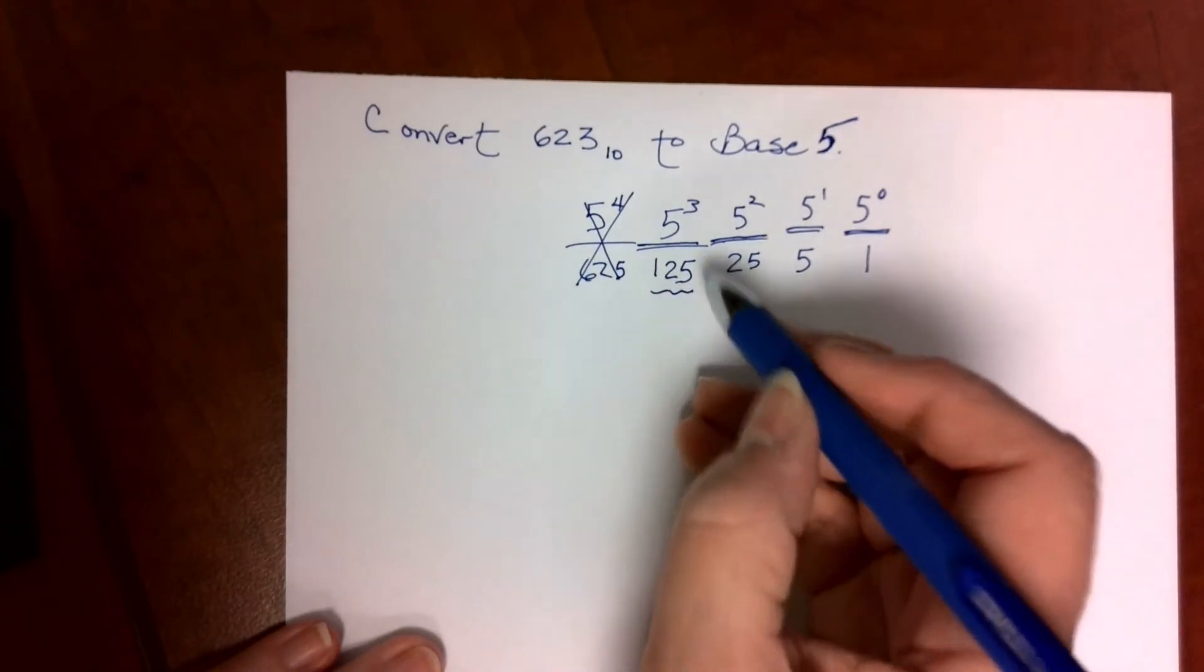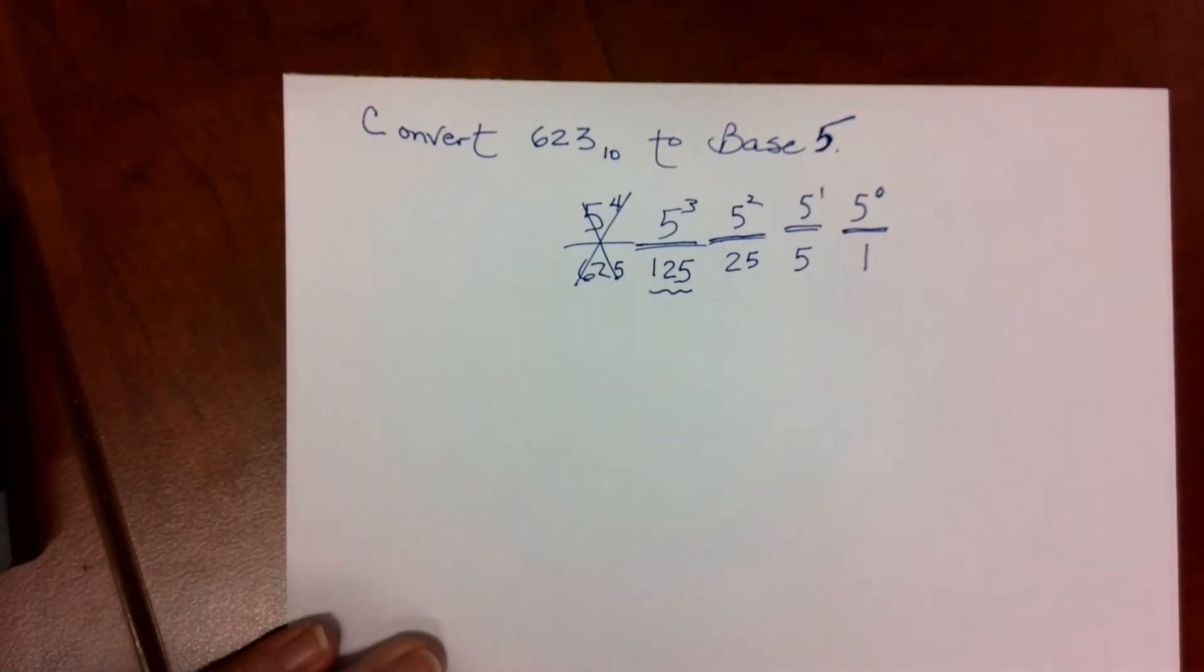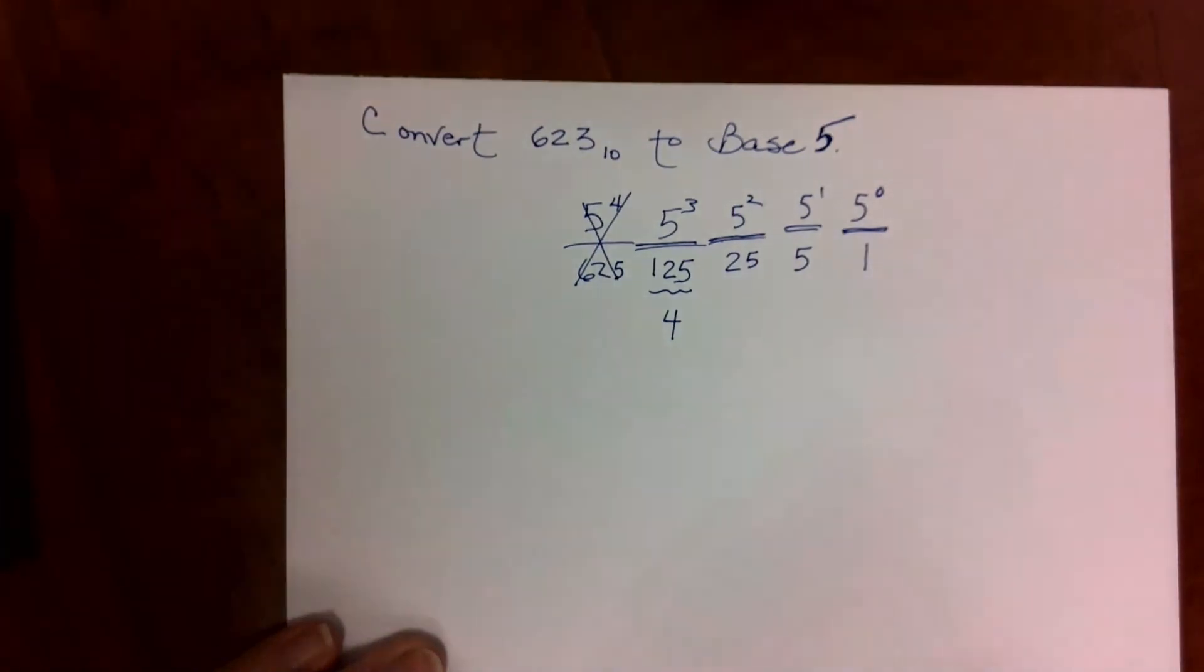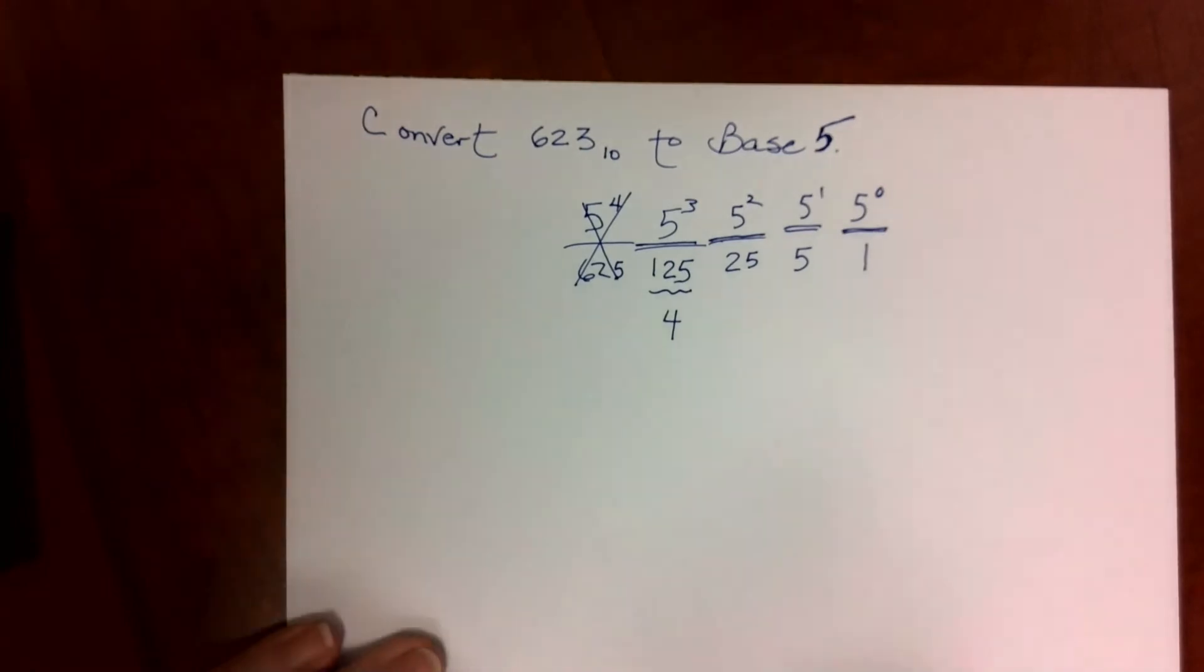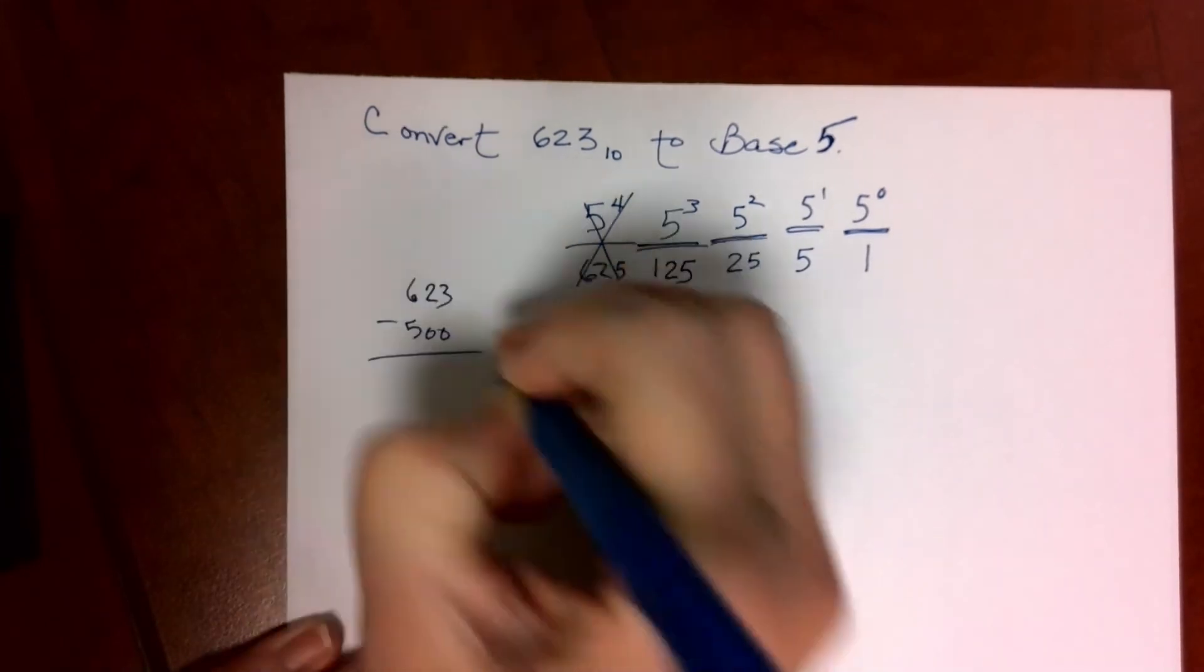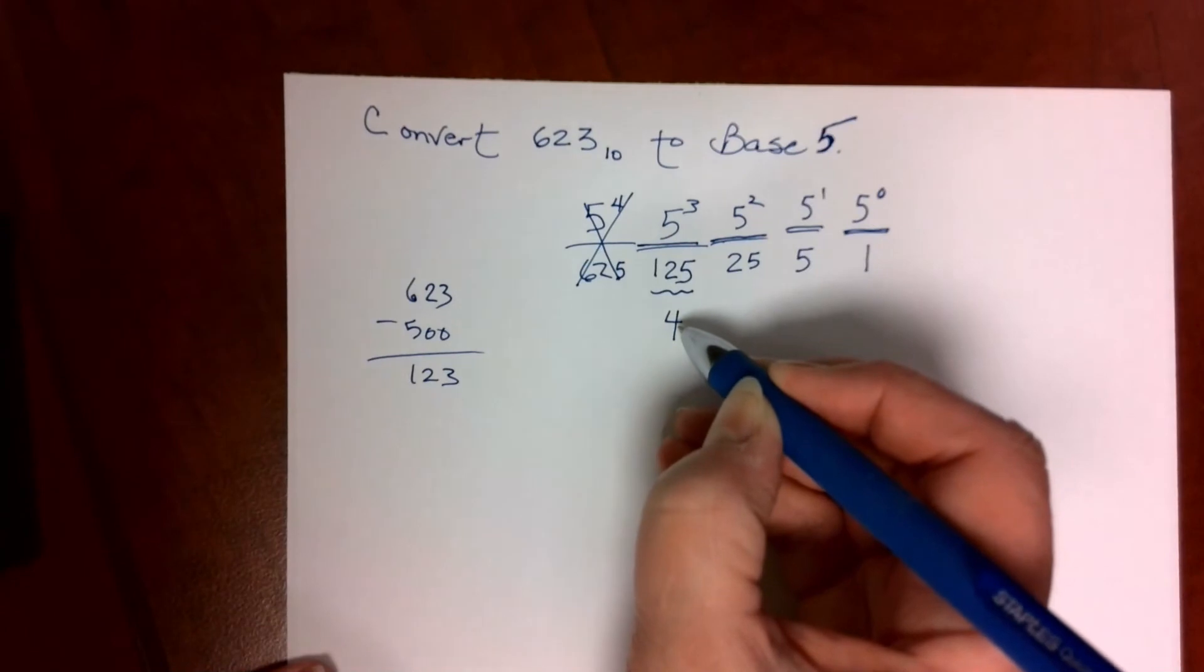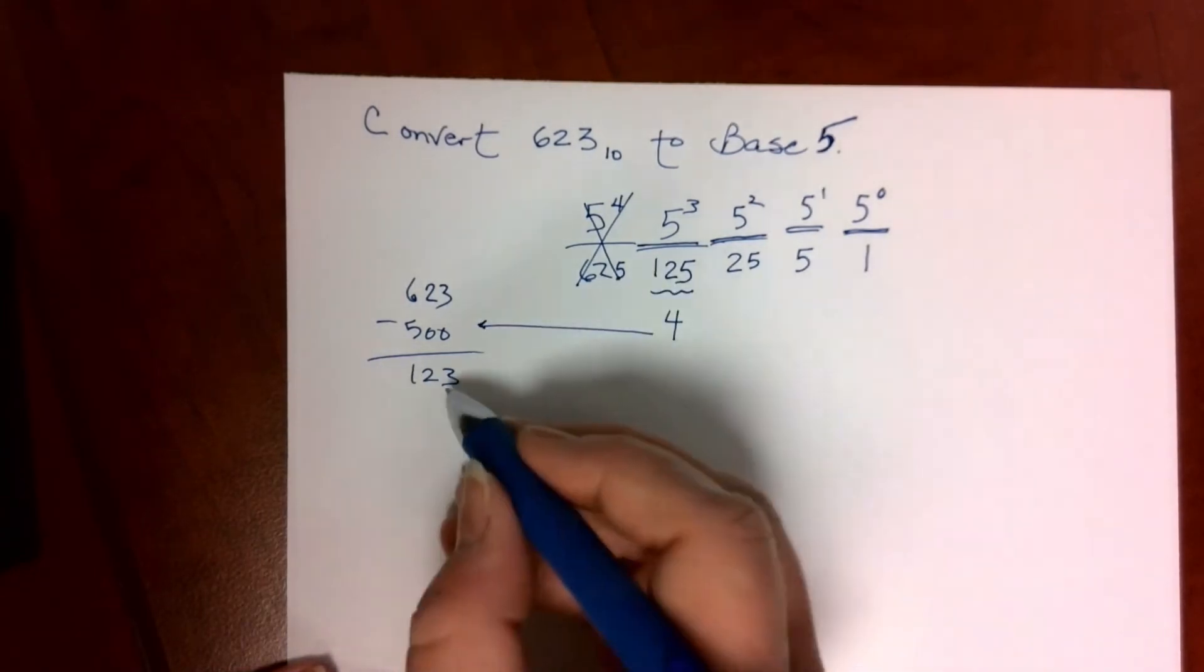How many 125s are found in 623? That will require us to divide 623 divided by 125. It goes in 4 times. I need 4 125s to fit into 623. 4 125s is 500, so I need to take that 500 away from 623. You see I've already accounted for that 500 right here.